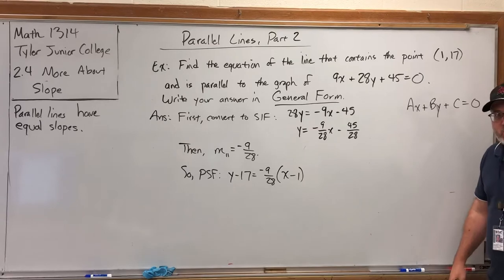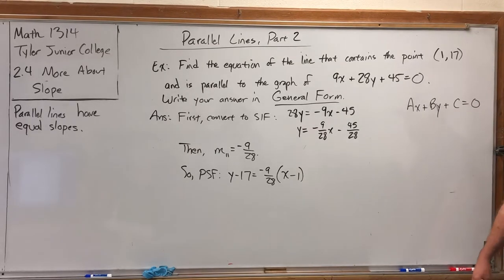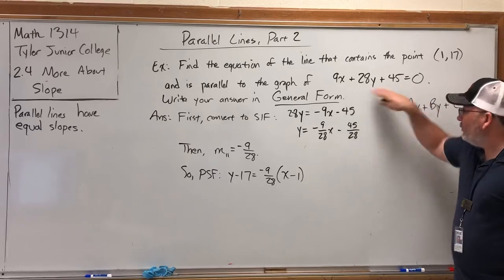But the purpose of general form is to look pretty. In some authors' opinions, it's okay if the A, B, and C are fractions, and it's okay if the A is negative. But if I'm going to make this equation look pretty, I don't want fractions and I don't want negatives.